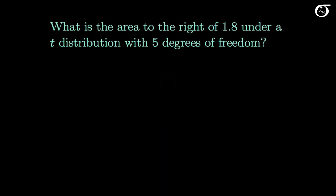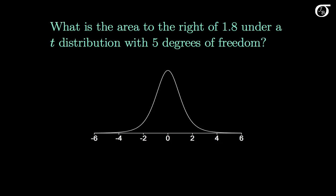What is the area to the right of 1.8 under a t-distribution with 5 degrees of freedom? I'm going to draw in a t-distribution with 5 degrees of freedom, put in 1.8 which is somewhere around there, and we're looking to find this area to the right. So let's go to the table and find that.